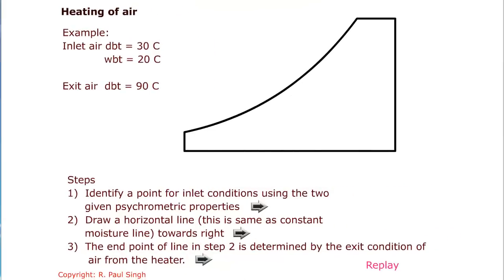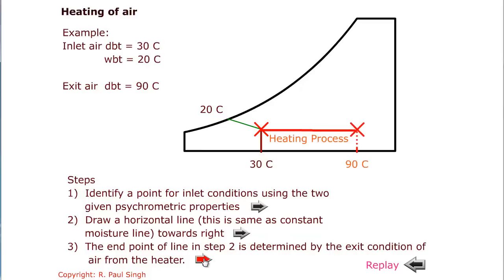Let's look at some animations. In the case of heating of air from 30 degrees C dry bulb temperature and 20 degrees C wet bulb temperature, we identify a point and then follow a horizontal line to the final exit air temperature of 90 degrees Celsius. Thus, we have identified the horizontal line and the initial and exit conditions for the heating process.